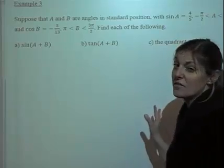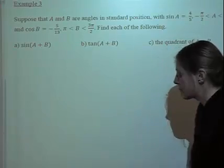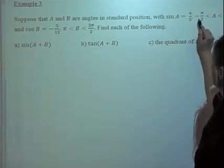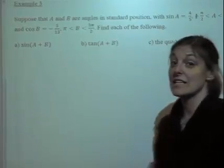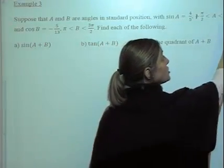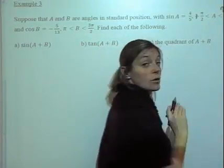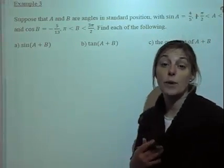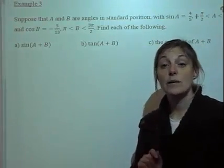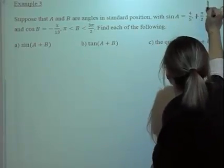Our interval here is a little bit messed up, so let's fix it right now. It's supposed to be between positive pi over 2 and pi. Sorry for that typo, but a will be in between pi over 2 and pi, so that means it's in the second quadrant.